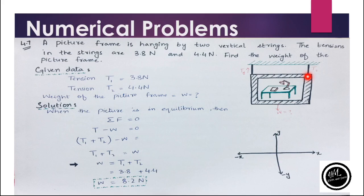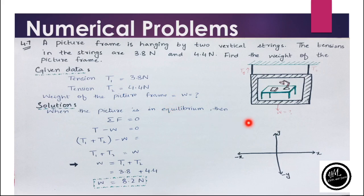These tensions will be balanced with the weight of the picture frame, which acts in the downward direction, and we have to find the weight. T1 is 3.8 Newton and T2 is 4.4 Newton. The body is in equilibrium, meaning there is no net force acting on it, so to satisfy the first condition of equilibrium: sigma F equals zero.